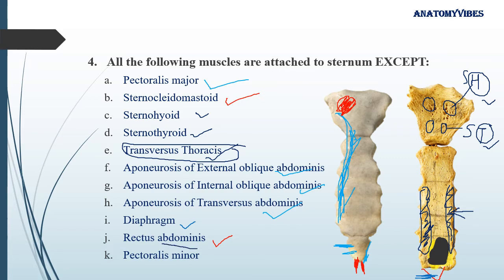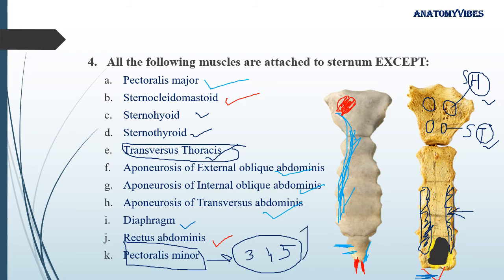Pectoralis minor, as we already know, is attached to the 3rd, 4th, and 5th ribs near the rib-cartilage junction, and from there goes to the medial border of the coracoid process of the scapula. It is not attached to the sternum. So the answer is pectoralis minor.